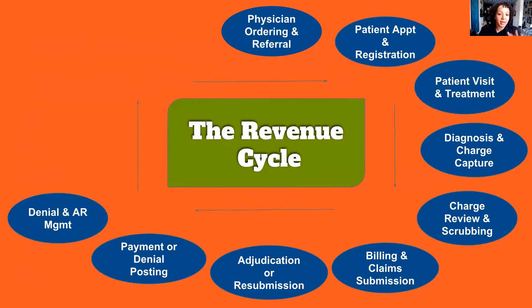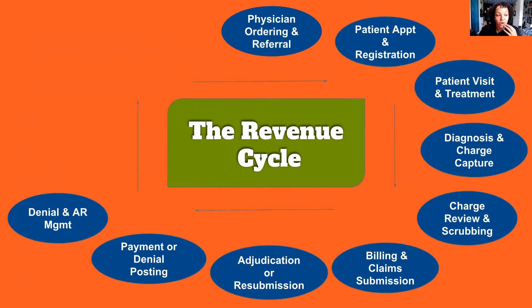Once you've gotten past the denial — let's say you did not receive a denial or a claim rejection, or both — and instead now we have a claim that's sitting out there and we aren't sure what that is, that's when the AR management process comes in.